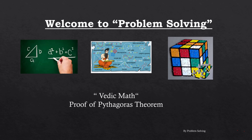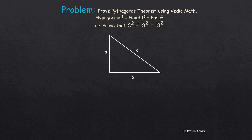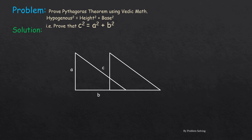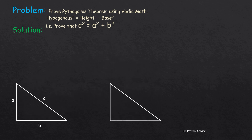Hello everyone and welcome to Problem Solving. In today's video we're going to be proving the Pythagorean theorem using Vedic maths. The Pythagorean theorem works for only right angle triangles and it states that the hypotenuse squared is equal to height squared plus base squared, or in the figure shown below, c² = a² + b². So let's move on to the solution.